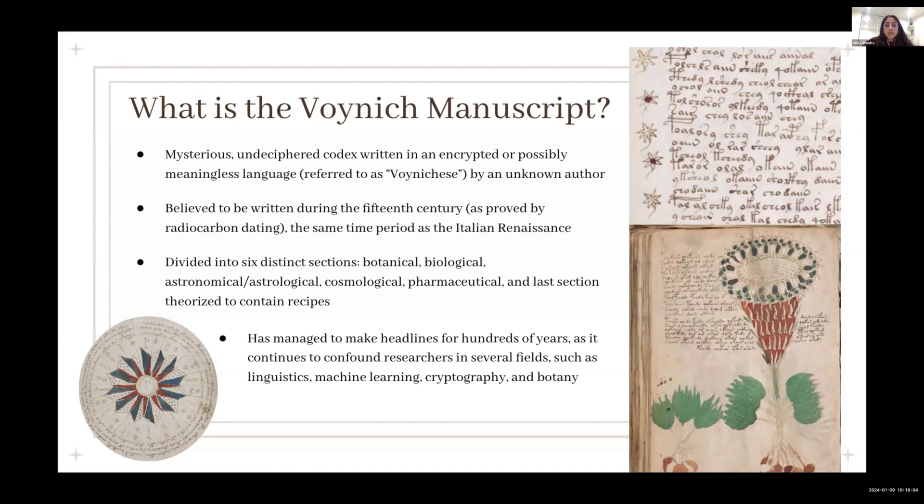There is also a biological section, which has drawings of mysterious feminine figures. The astronomical slash astrological section contains diagrams of zodiac signs and sun, moon, and star charts. The cosmological section contains large fold-out mandalas of stars. The pharmaceutical section contains drawings of medicinal plants and ancient herbal remedies. And finally, the last section contains no images, but is theorized to contain recipes.